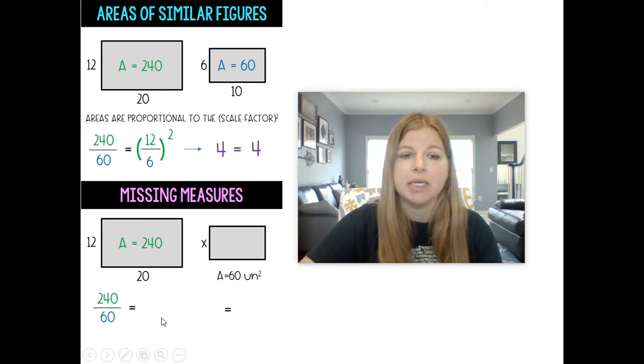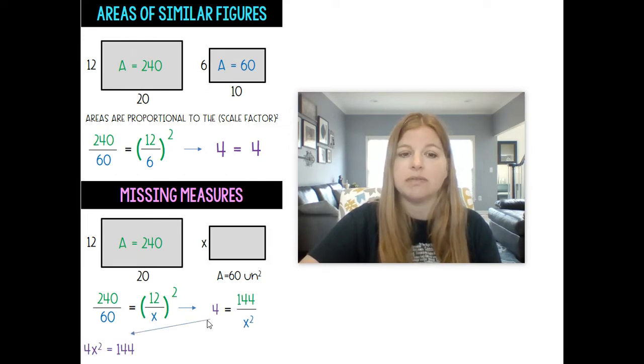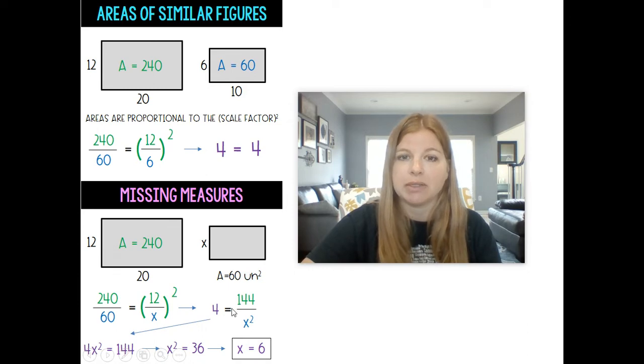So 240 over 60 would be equal to 12 over X squared. 240 over 60 is 4. 12 over X squared you square the numerator square the denominator so that becomes 144 over X squared. We would multiply both sides by X squared, divide both sides by 4 and take the square root and we get 6 which is exactly what we knew it was.